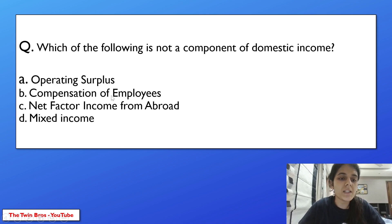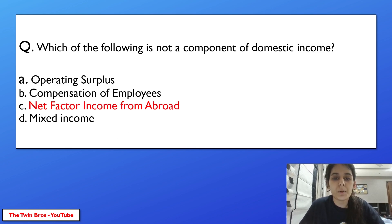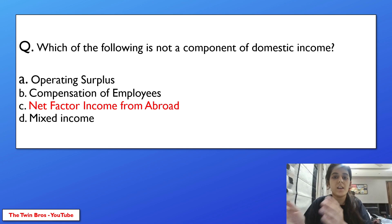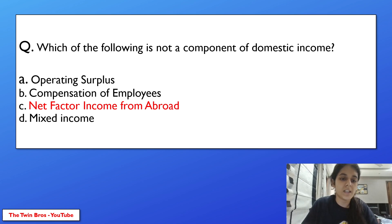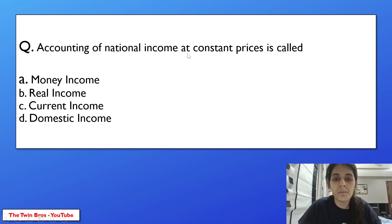The first question: which of the following is not a component of domestic income? Options are operating surplus, compensation of employees, net factor income from abroad, and mixed income. The answer is net factor income from abroad. It is not a part of domestic income — it is the factor income collected from Indians living abroad.